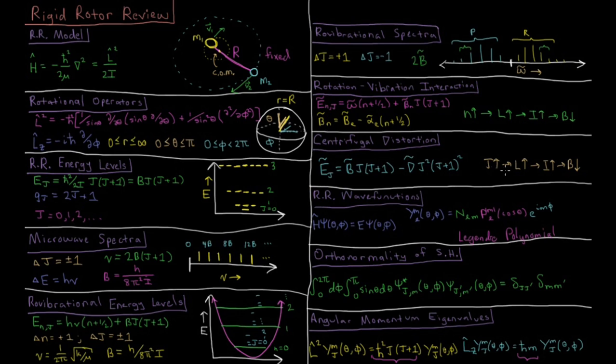So as J goes up, you also have the bond length going up, moment of inertia going up, and thus the rotation constant going down. The energy levels will get spaced a little bit closer together as you go up.